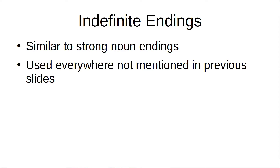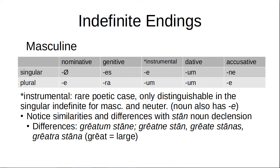The indefinite endings are similar to the strong noun endings. They're used everywhere not mentioned in the previous slides. If you just want to say 'a good man,' that would be gold wear — simple indefinite endings. The masculine is similar to the Staan declension: nominative singular is nothing, genitive is -es, instrumental is -eh (rare and only used in poetry, and only distinct from the dative in the adjectives for the singular indefinite for masculine and neuter). The dative has -um, the accusative has -ne. In the plural: nominative -eh, genitive -ra, instrumental and dative both -um, accusative -eh.